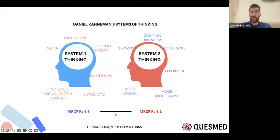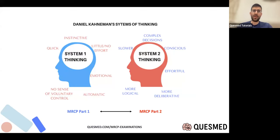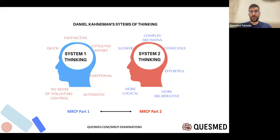There's a lot of overlap, so questions in part one can conceivably come up in part two, but it's more about general trends. Generally, part two questions are more complex and longer, focusing on clinical decision-making, whereas part one is more about things like what is the gene associated with this, or what is this mechanism.